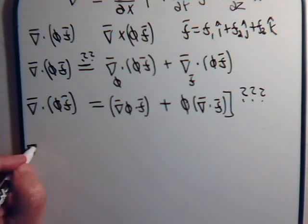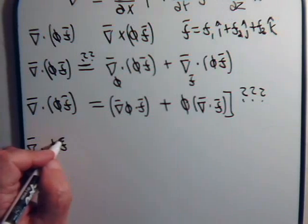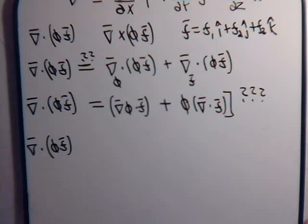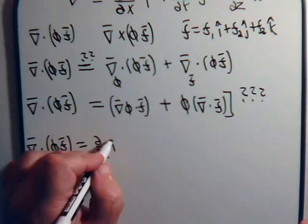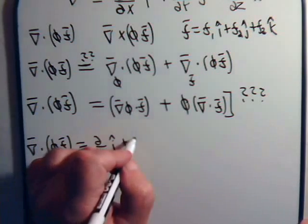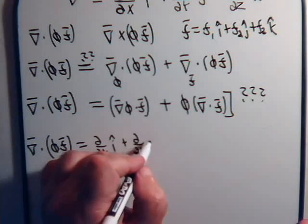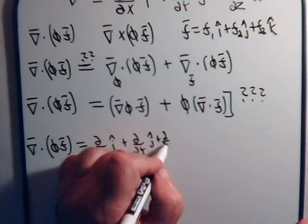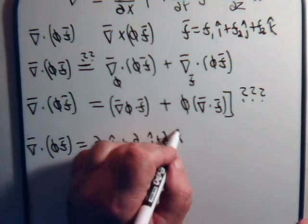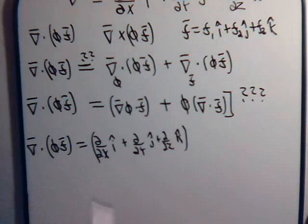So, del dot phi f and what is del? Partial with respect to x times i plus the partial with respect to y times j plus the partial with respect to z times k and we're going to take the dot product of that with phi times f.